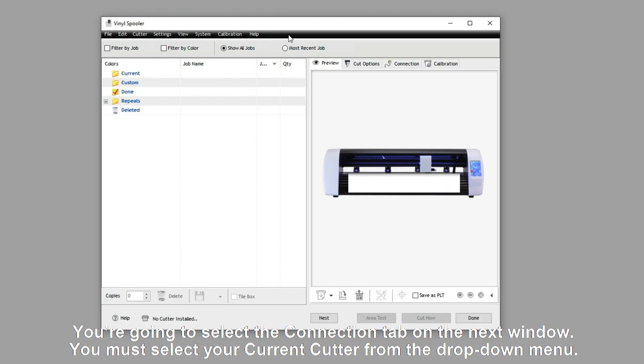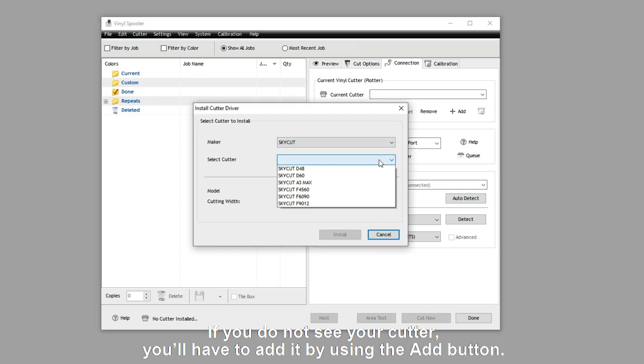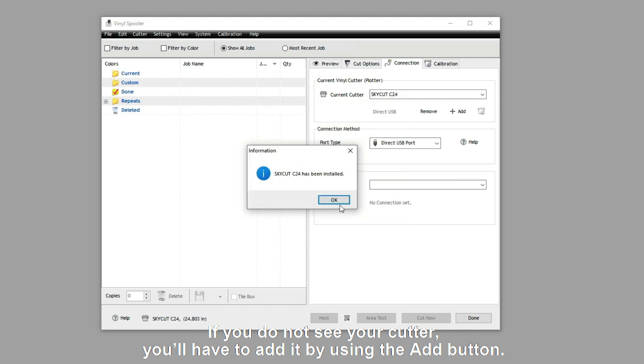You're going to select the Connection tab on the next window. You must select your current cutter from the drop-down menu. If you do not see your cutter, you will have to add it by using the Add button.